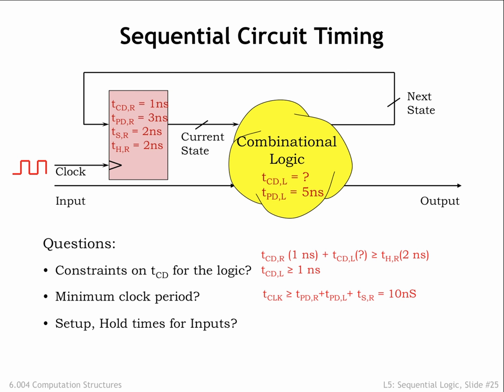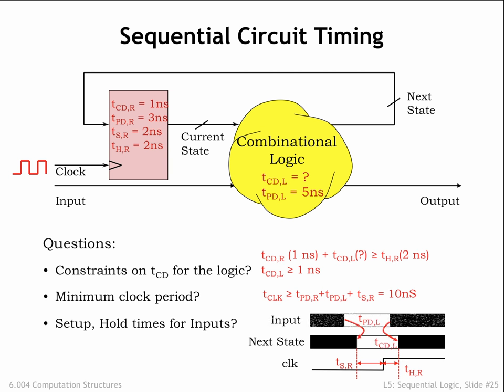What are the timing constraints for the input signal relative to the rising edge of the clock? For this, we'll need a diagram. The next state signal is the input to the register, so it has to meet the setup and hold times as shown here. Next, we show the input signal and how the timing of its transitions affect the timing of the next state signal.